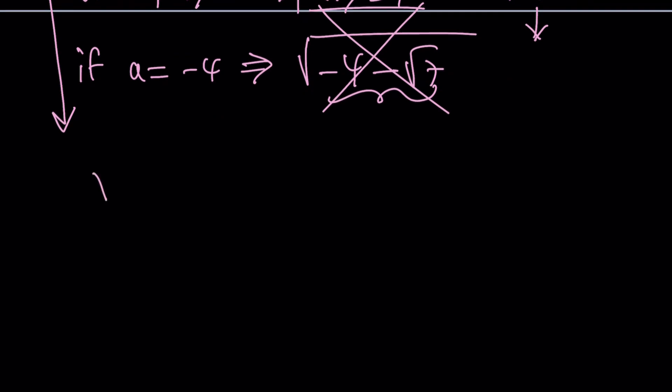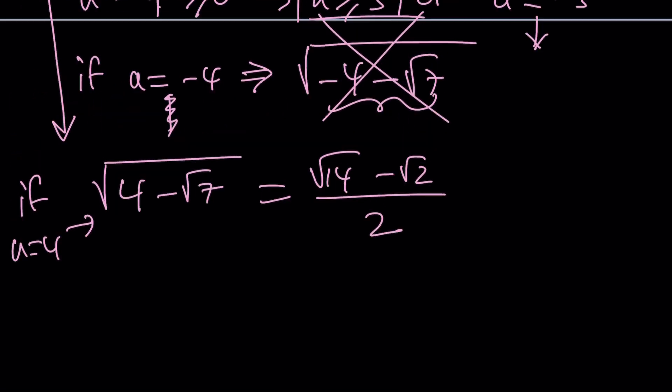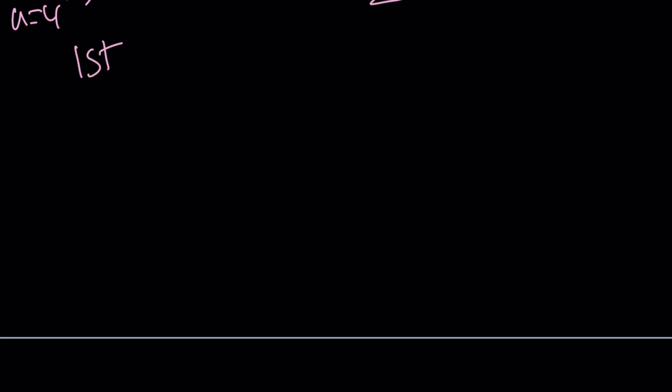And if a is equal to four, you get that. Now, how do you simplify this? Let me tell you. This can be simplified into root 14 minus root two divided by two. If you square both sides, you're going to realize what I'm talking about. Let me not tell you how to do it right now. But hopefully, you know what I'm talking about. So let's go ahead and start with the first method now.